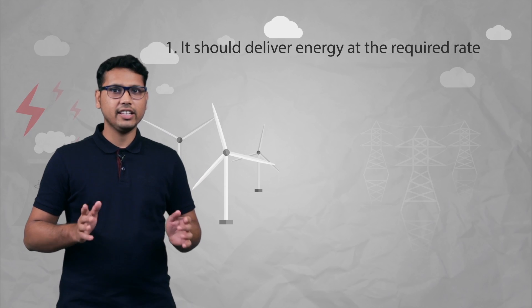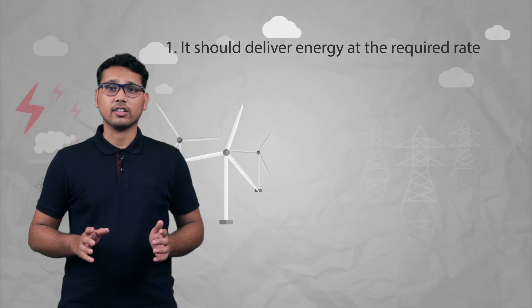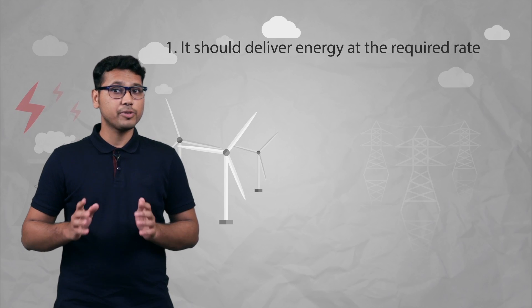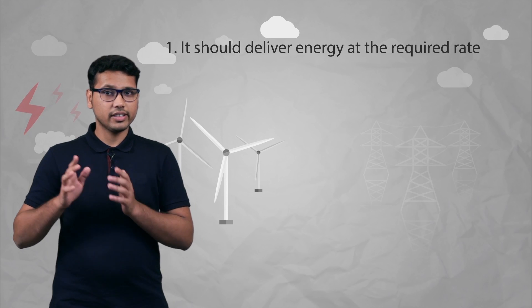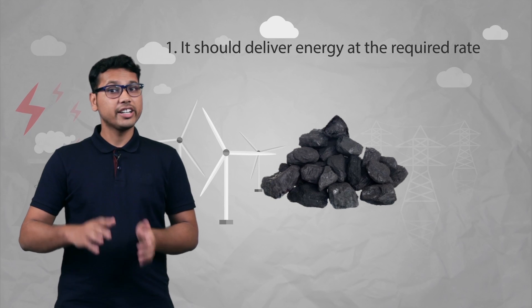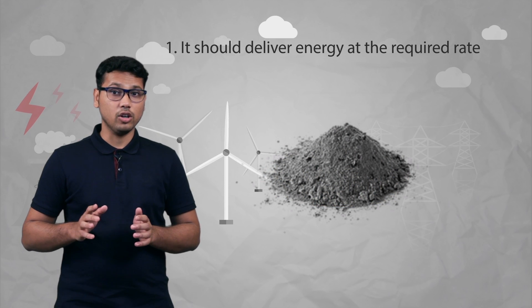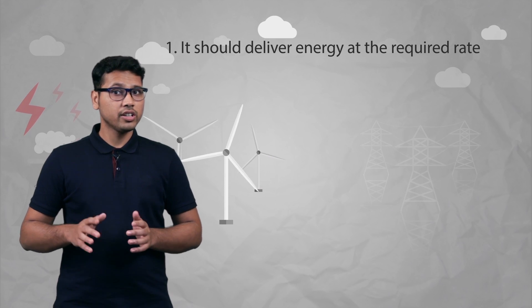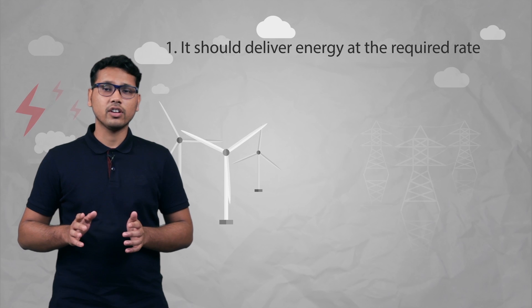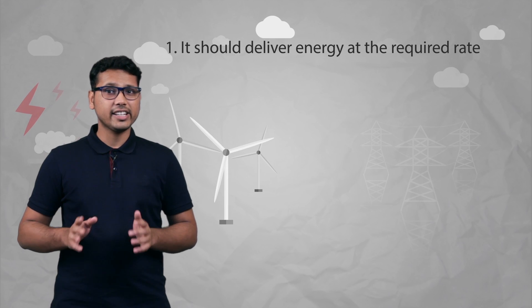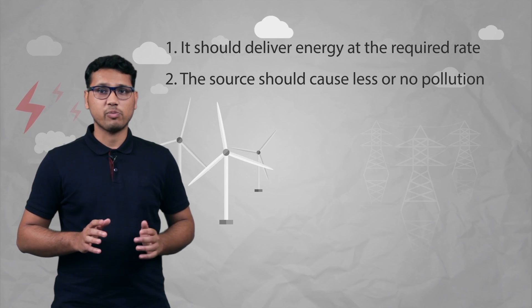Suppose you easily find out the source which provides the right amount of energy for cooking. But on the other hand, it also produces a large amount of pollution. Suppose you are cooking the food on coal — it gives too much smoke while burning and also produces a lot of ash. So would you use coal for cooking? Obviously you will be searching for an alternative. So the second criteria is that the source should produce less amount of pollution.